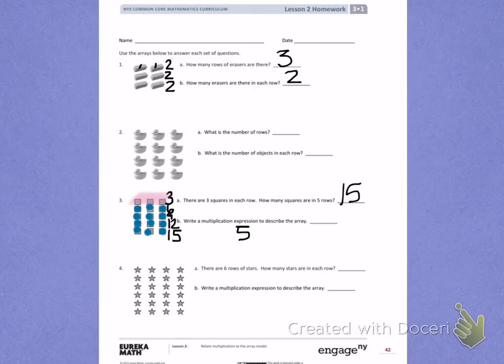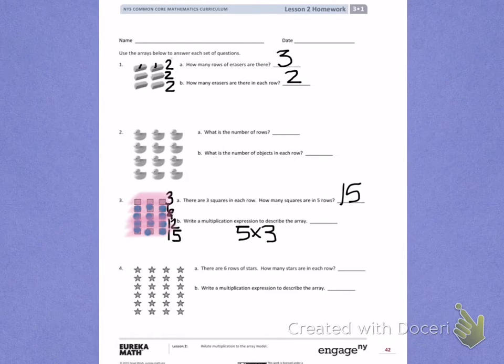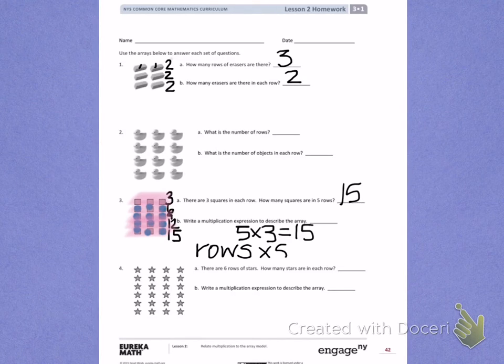Here is row 1, 2, 3, 4, 5. In each row, there are 3 squares, which is my size. So I have 5 times 3, which gives me a total of 15. Remember, we're multiplying rows times size. Use this information to help you finish number 4.